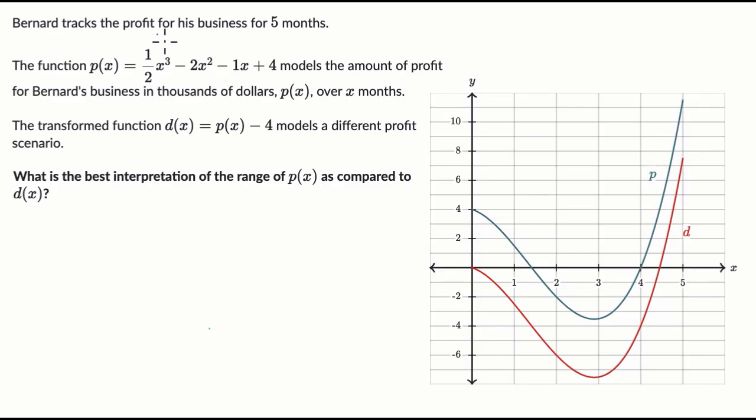We're told that Bernard tracks the profit for his business for five months. The function p(x), defined by all of this, models the amount of profit for Bernard's business in dollars, p(x), over x months.